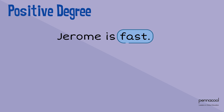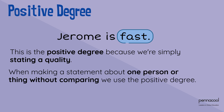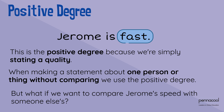Jerome is fast. This is a positive degree because we're simply stating a quality. When making a statement about one person or thing without comparing, we use the positive degree. But what if we want to compare Jerome's speed with someone else's?